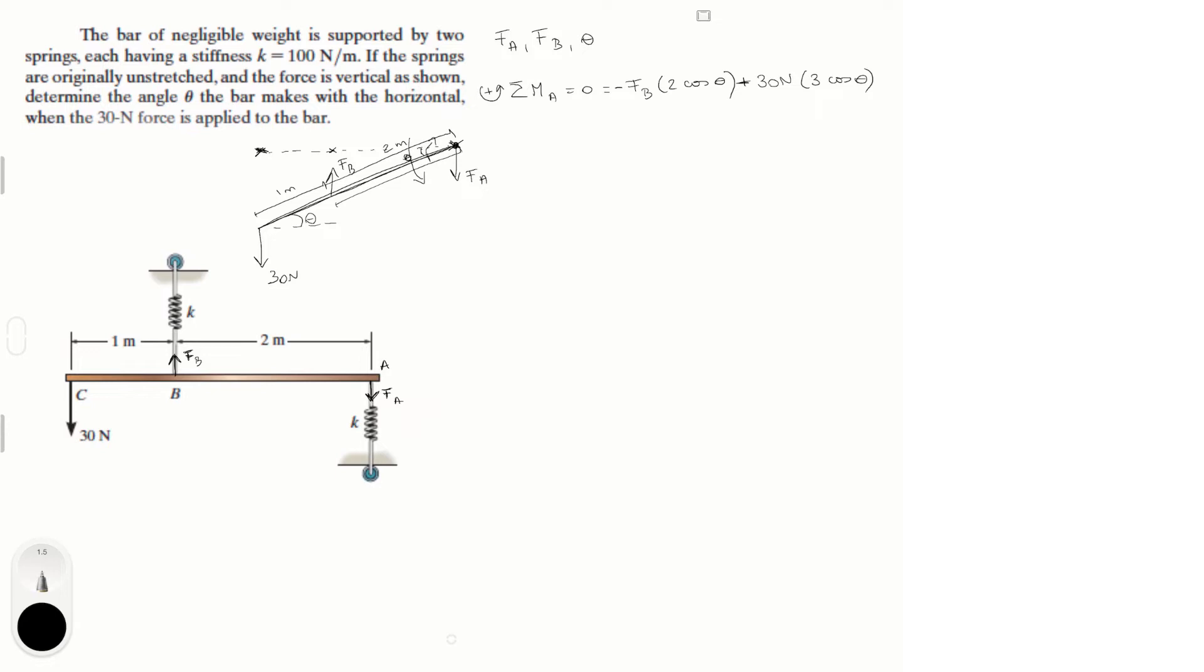So we have two variables here, we have theta and we have F_B, but look cosine of theta is in both, so you could divide both sides of the equation by cosine of theta. This cancels out and you get minus F_B times 2 plus 30 newtons times 3. So here you get that negative 2 F_B plus 90, and if you solve for F_B doing some basic algebra you're going to get that F_B is equal to 45 newtons.